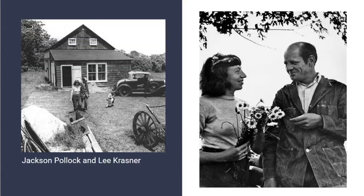In 1945, Jackson married Lee Krasner, who was also a painter. Searching for a quieter life away from the competitive New York art scene, the couple moved to a Long Island village called Springs. Their new home was a rundown rural clapboard house. Lee said the house was heated with coal stoves and had no hot water. Not until 1949, when the Museum of Modern Art had bought a second painting, did they call the plumber up the road and have heat and hot water put in. A small barn on the property was moved and turned into Jackson's studio.